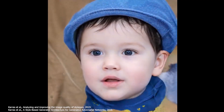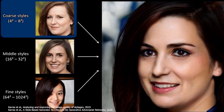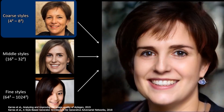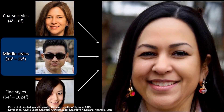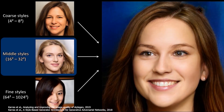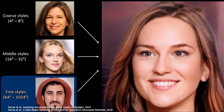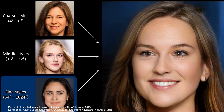2D generative models produce photorealistic results, however they lack animator control. StyleGAN and StyleGAN2 achieve excellent photorealism and offer some control by associating semantic attributes to generator activations at different depths in the network with a style mixing mechanism. However, this provides only limited animator control.